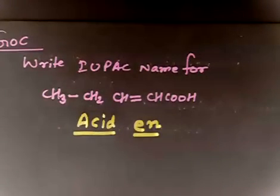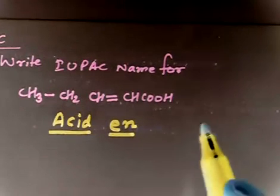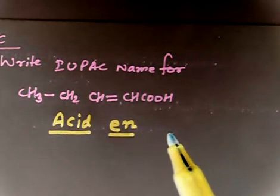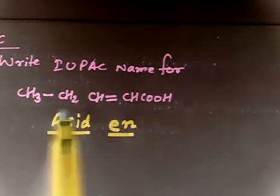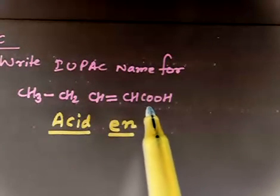Of course, in series, in priority table, acid comes first. So, acid is given more priority with respect to ene. So, I have to number from this side. Basically, in case of acid, always number from this side.